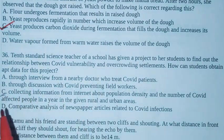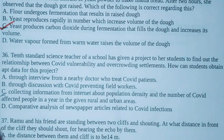During the pandemic situations we should not be close to anyone like doctors, field workers. So option C is the correct option for collecting the data for the project work - collecting information from internet about population density and the number of covid affected people in a year in the given rural and urban areas. Option C is the right answer.